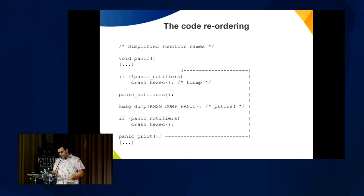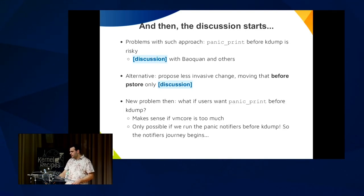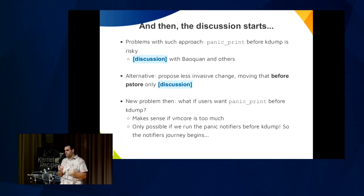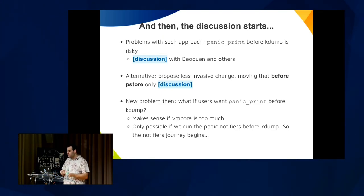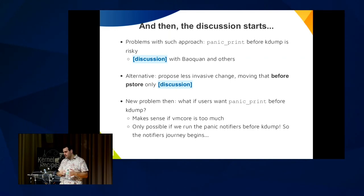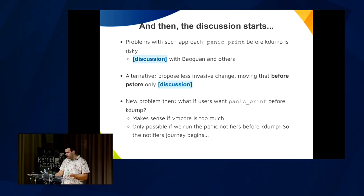The proposal is to reorder the code — just move panic_print to the top, before the pstore. But when we proposed that, there was a bunch of discussion. It's risky to do stuff before kdump — the kdump maintainer discussed this at length. They want to do as little as possible before kdump. So we proposed the less invasive change: move panic_print only before pstore, not before kdump. But then a new problem: what if users want panic_print before kdump? For that we'd need to run pstore before kdump. So let's talk about how the notifier stuff works.